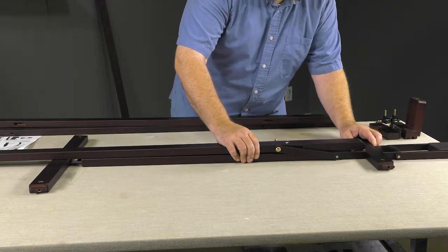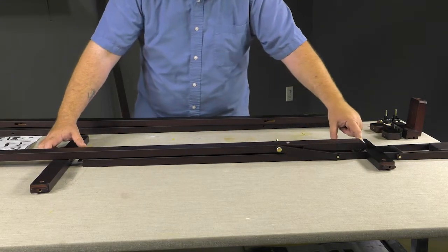Begin by placing the center mast, Q, between the top and bottom supports, O and P.